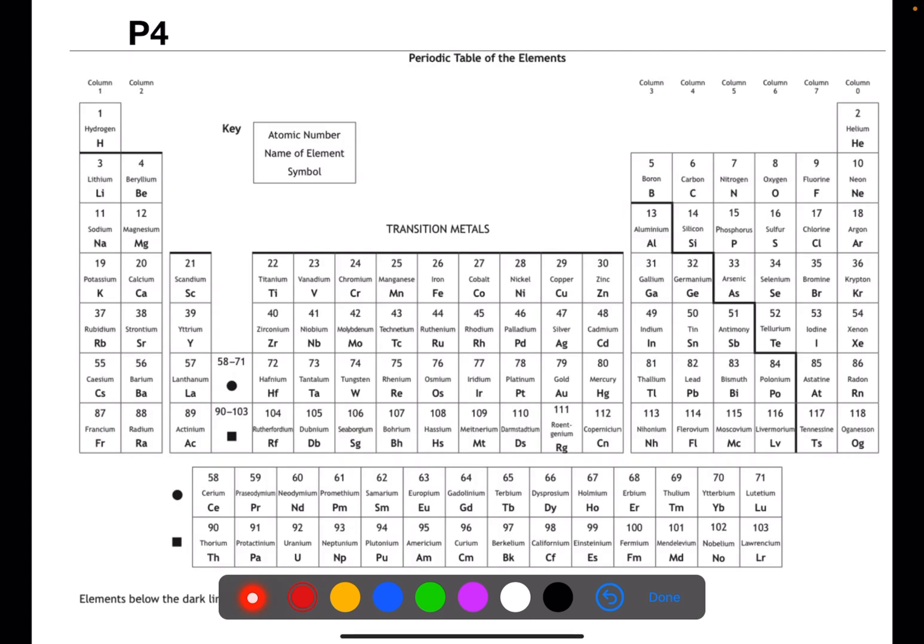On page four of the data book you have the full periodic table. On this page, each of the boxes shows you the atomic number, the name of the element and the symbol. They go in order from left to right across the periodic table in increasing atomic number. You also have the column numbers at the top which you can relate to the valency.